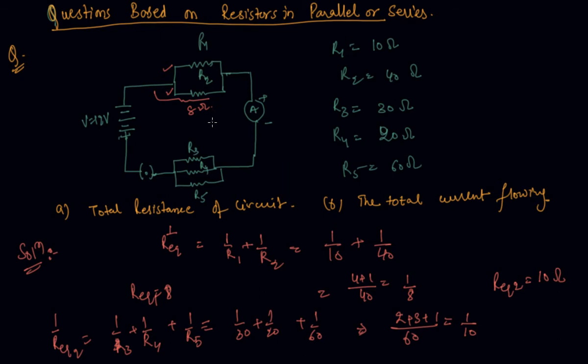So now you can see that the R structure will look like this: R equivalent 1, here is ammeter, then here R equivalent 2 and these two R equivalents are now in series. So what I can do here is I will add R equivalent net is R equivalent 1 plus R equivalent 2. So this is 8 ohm plus 10 ohm would be 18 ohm. So our first answer is completed, the total resistance of the circuit is 18 ohm and I have to find out the total current flowing through the circuit now.